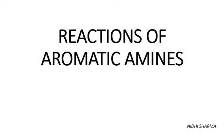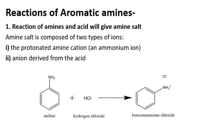Reactions of Aromatic Amines. The first reaction of amine and acid will give an amyl salt. An amyl salt consists of two types of ions: the pre-created ammonium cation and an anion derived from the acid. Amyl reaction will add in 2-8 to give benzene amylium 2-8.